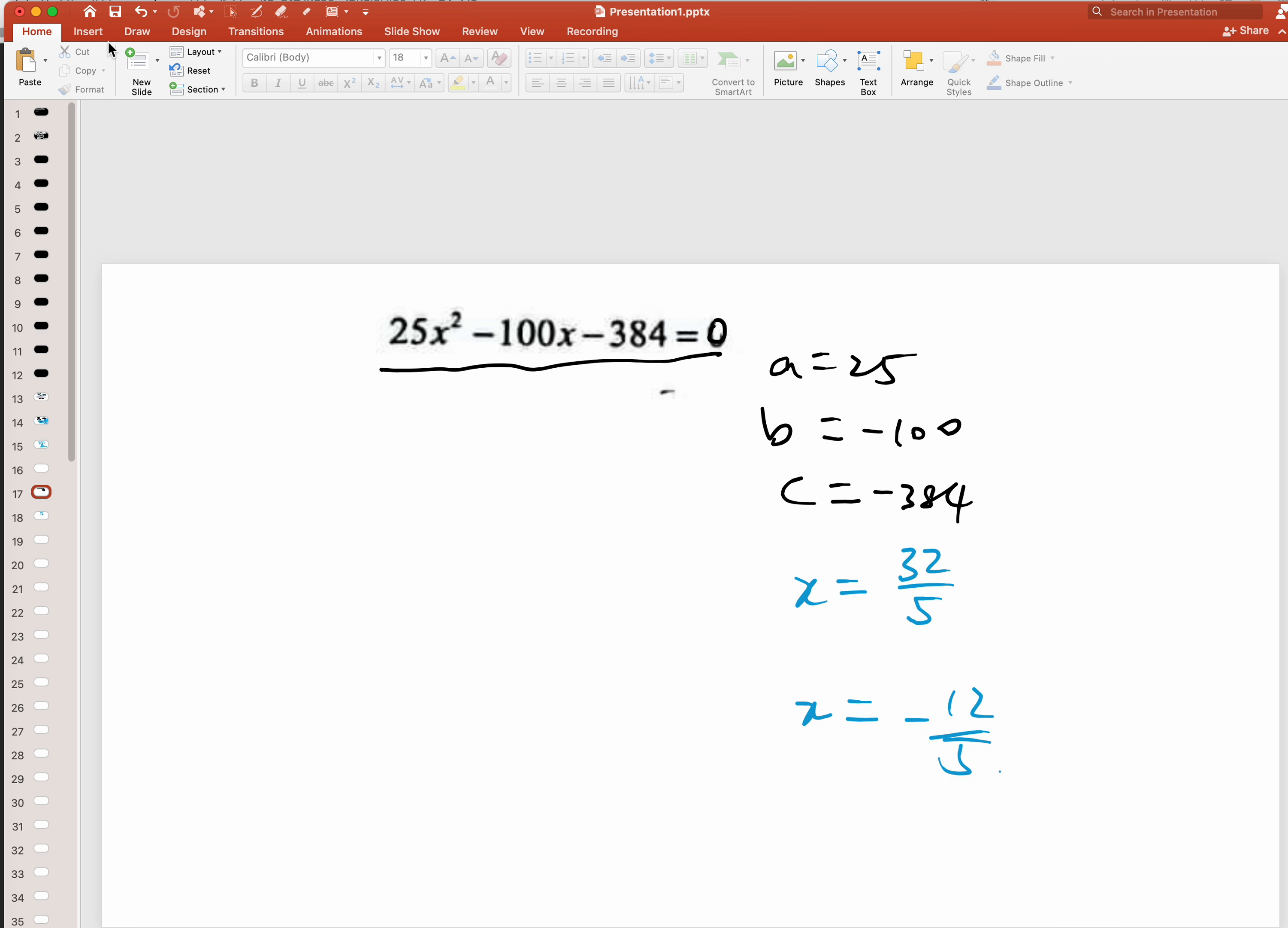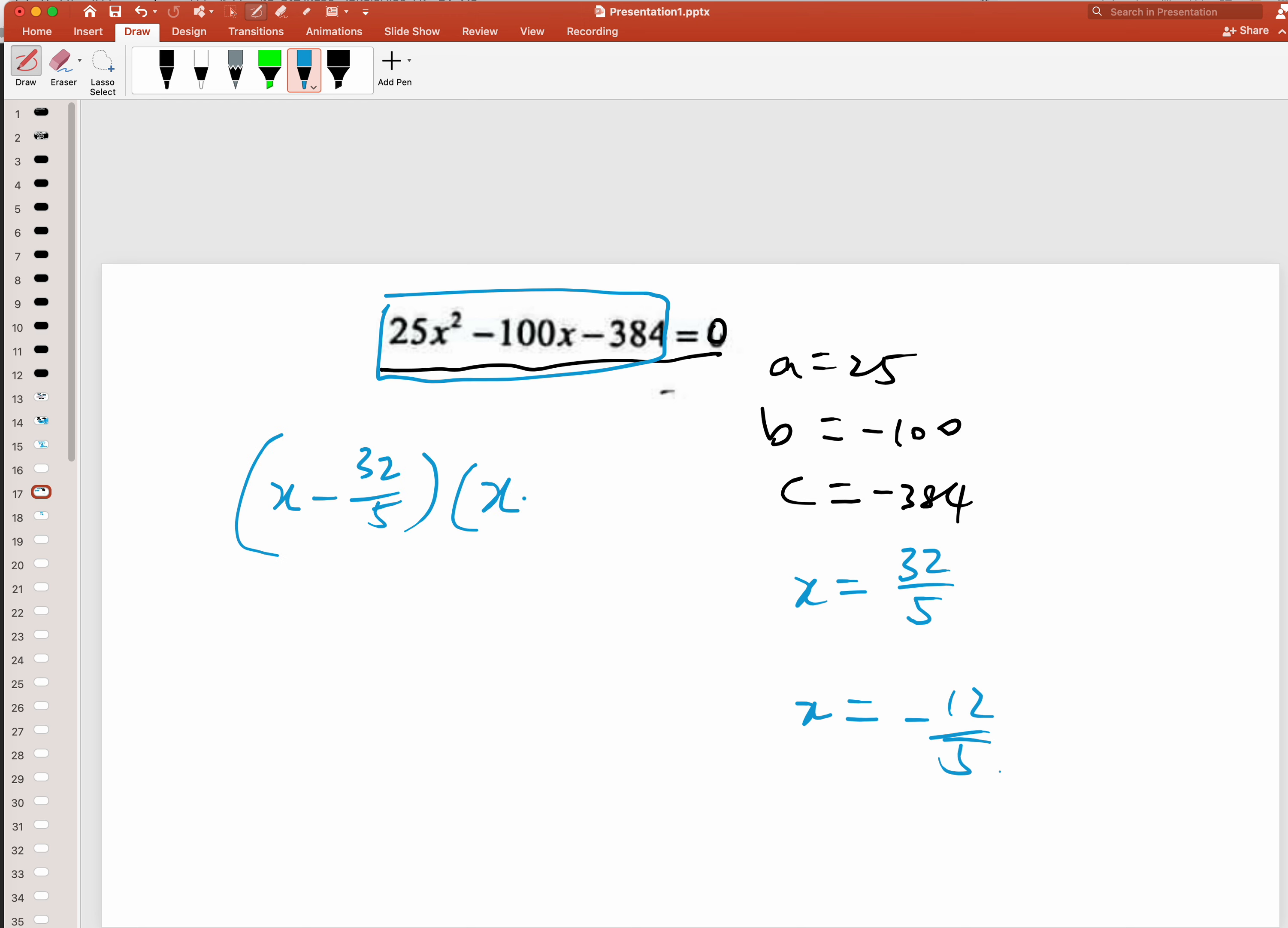What this means is this can actually be reduced to (x - 32/5)(x + 12/5) = 0. Why? Because only when you have x minus 32/5, when you equate to zero, your x will be 32 over 5.